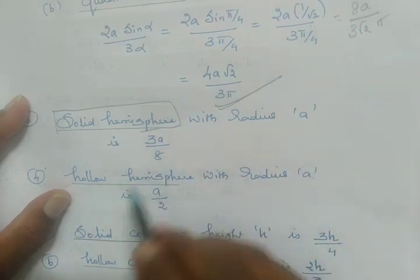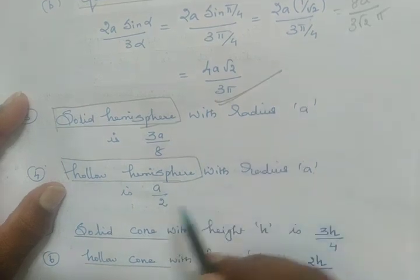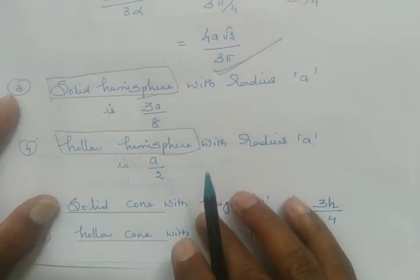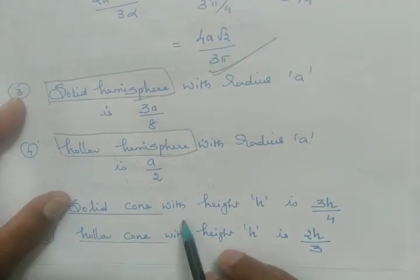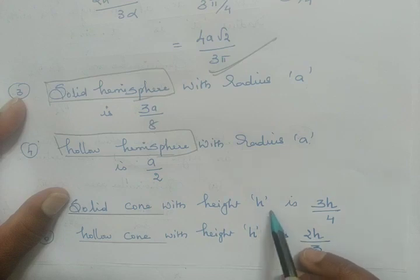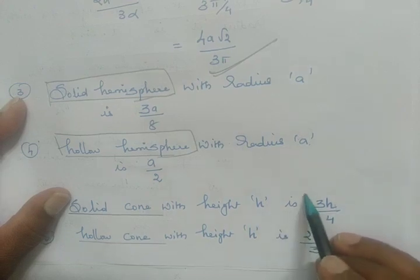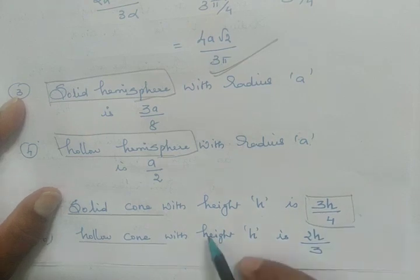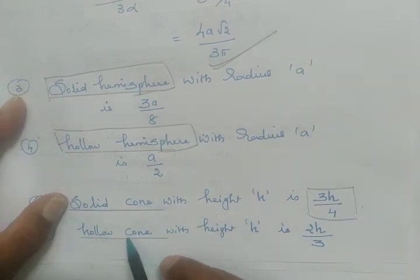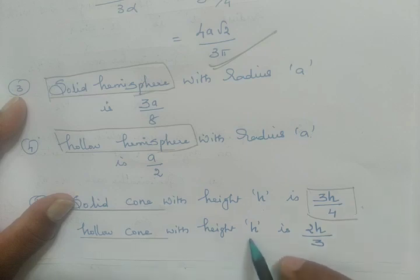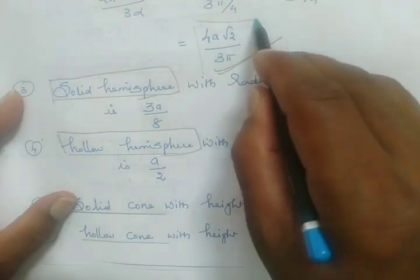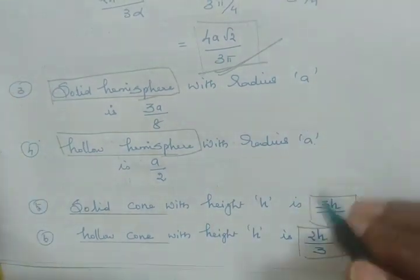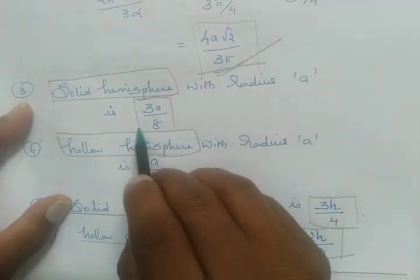Solid hemisphere with radius a, whose center of gravity CG is 3a/8. Hollow hemisphere with radius a, whose center of gravity is a/2. Now, solid cone with height h, whose center of gravity is 3h/4. And hollow cone with height h, whose center of gravity is 2h/3.